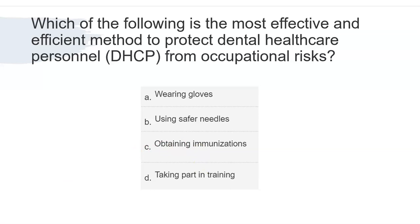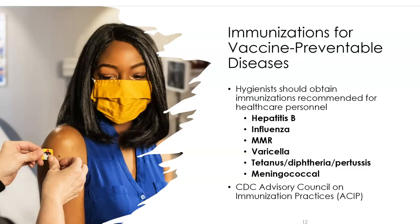When getting immunized, the recommendations are: Hep B, influenza shots, MMR — which stands for measles, mumps, and rubella, typically given in infancy — and tetanus, which requires a booster every 10 years.